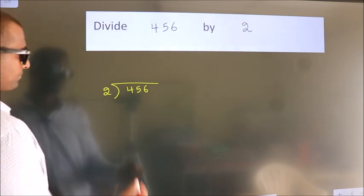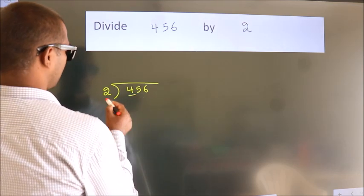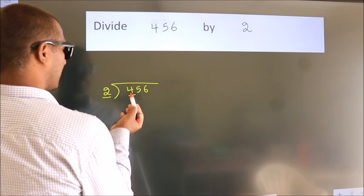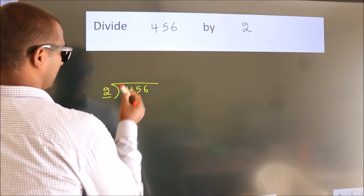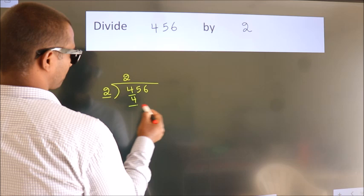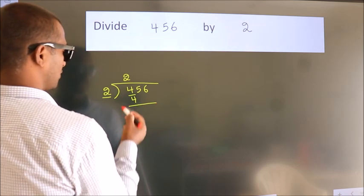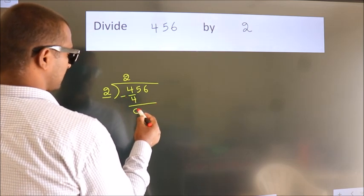Next, here we have 4, here 2. When do we get 4? In 2 table: 2 2's, 4. Now we should subtract. We get 0.